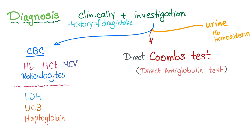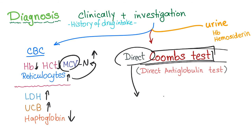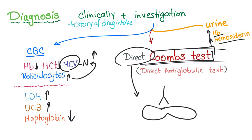Plus investigations: CBC will give you low hemoglobin and low hematocrit. Reticulocytes will be high because this is hemolysis. MCV could be normal, but reticulocytes could raise the MCV since reticulocytes are bigger than red blood cells. LDH high, unconjugated bilirubin high, haptoglobin low. For diagnosis, the direct Coombs test detects antibodies on the surface of the red blood cell. In the urine: hemoglobinuria and hemosiderinuria, especially in cases of intravascular hemolysis.